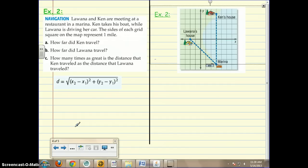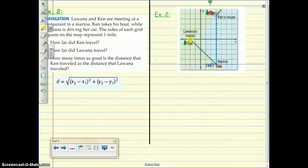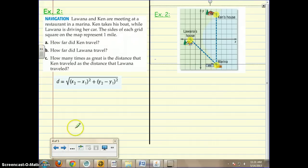So Lawana and Ken are meeting at a restaurant in the marina. So let's look at this picture here. Here's where Lawana's starting, here's where Ken's starting. They're meeting at this marina. Ken takes his boat while Lawana is driving her car. The sides of each grid square on the map represent one mile.